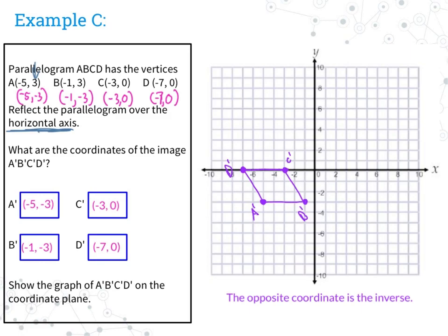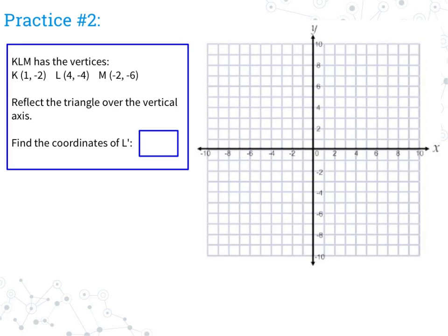Now let's have you try another practice problem. Practice number 2 says triangle KLM has the vertices listed below — reflect the triangle over the vertical axis and find the coordinates of L prime. All you need to do is find L; K and M don't matter. You can use the graph or use the rule we just talked about. Pause the video now, then press play again to see if you are right. Did you get 4, negative 4? Since we're going over the vertical axis, the only thing that needs to change is the x-coordinate. So all you needed to do was take positive 4 and make it negative 4. Sometimes you won't have the graph, so remember this rule.